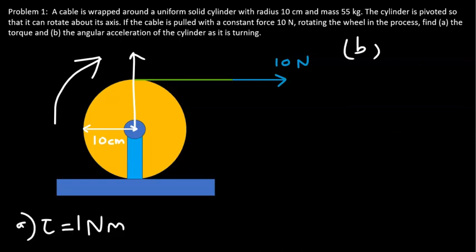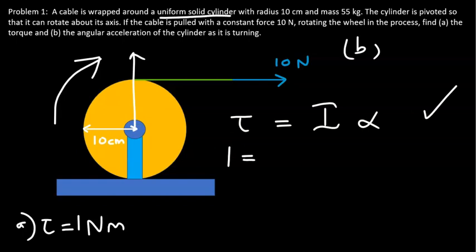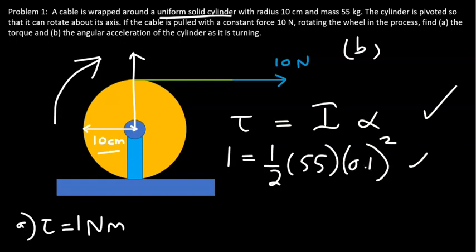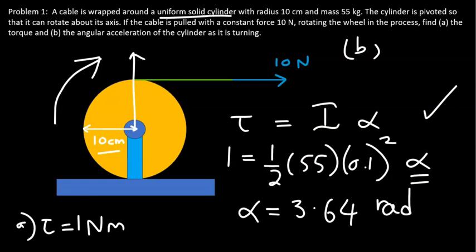To find the angular acceleration, we apply Newton's Second Law for Rotation. The torque is 1 N·m. The moment of inertia of a uniform solid cylinder is one-half times the mass times the radius squared: I = ½ × 55 × (0.1)² . Solving for alpha gives an angular acceleration of 3.64 radians per second squared.